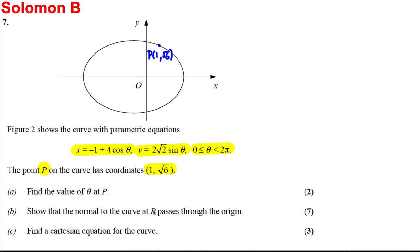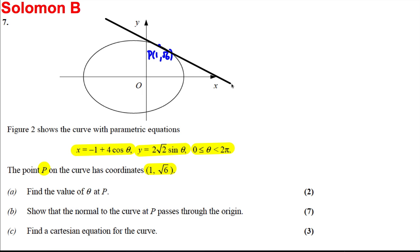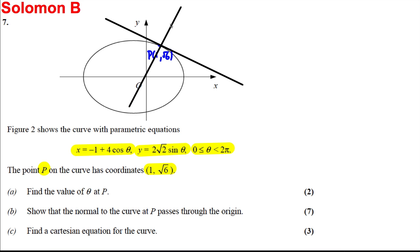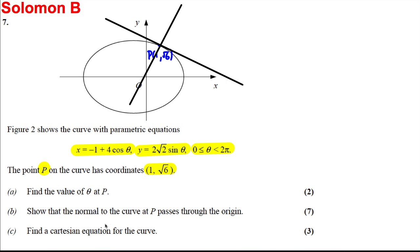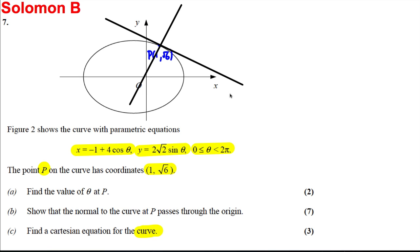Then show that the normal to the curve passes through the origin — the tangent to the curve looks something like this, and clearly the normal will look something like this, and we're asked to show it goes through the origin. And finally, find the Cartesian form of the curve.